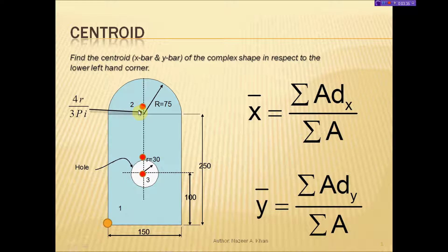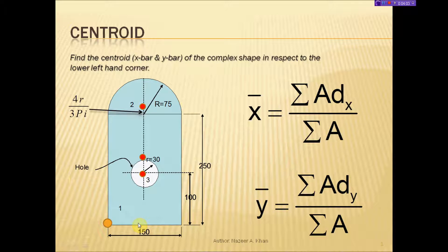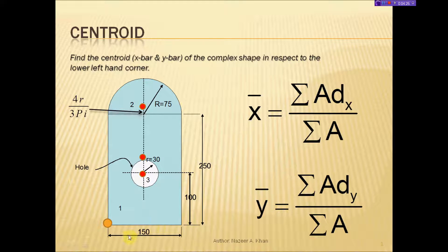Another way to recognize symmetry: if you cut this object directly down the center in the y direction, you would have two equal mirror-image parts — that indicates symmetry. The x values are all 75, which also indicates symmetry. Symmetry helps us minimize our calculation: due to symmetry in the x direction, x-bar is simply 150 divided by 2, which is 75.